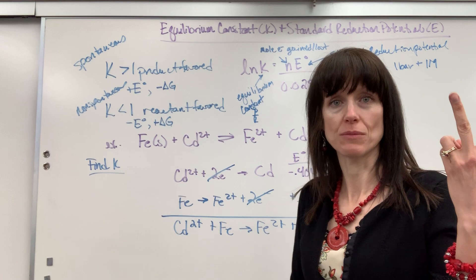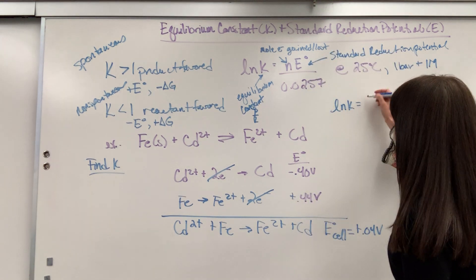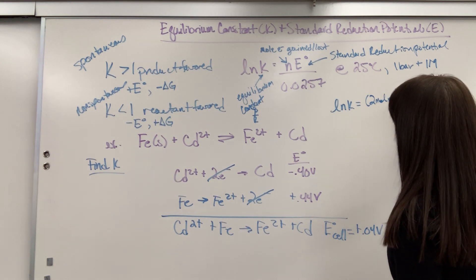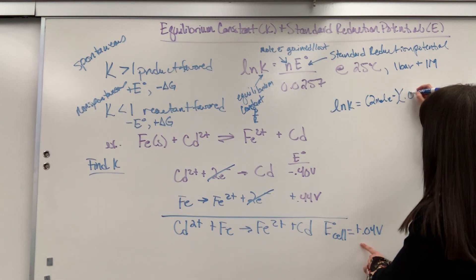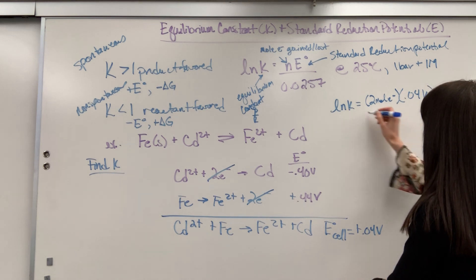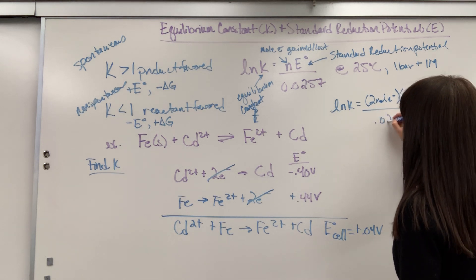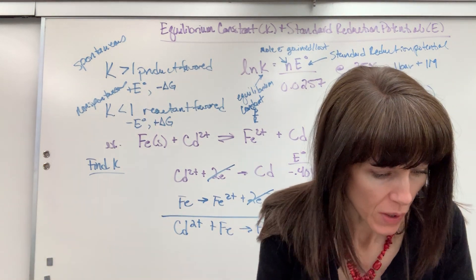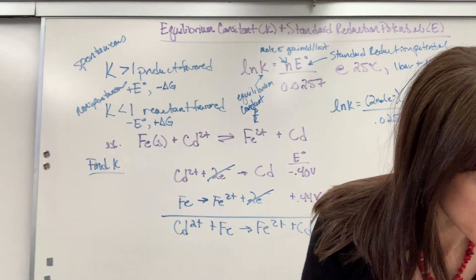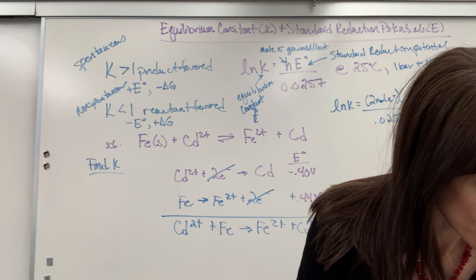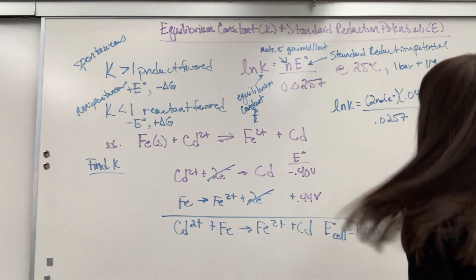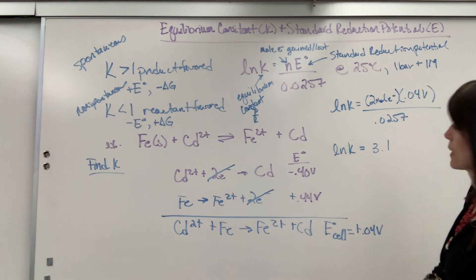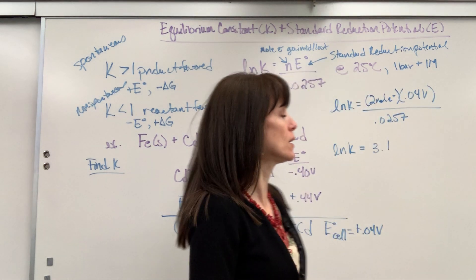So total two electrons were transferred. Two were lost and then those same two were gained. So we're going to have two moles of electrons times our potential, 0.04 volts, and we're going to divide it by 0.0257. We end up with 3.1 equals natural log of K.